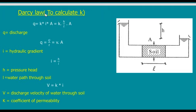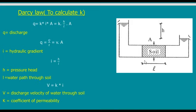There is an experiment where we put a sample of soil in a device. We have water at a fixed level on one side and a lower level on the other side, creating a difference in pressure — a head difference. Because of this, water is pushed to penetrate the soil and move to the other side. To do this experiment, we measure the head, the cross-sectional area of the soil, and the length of the soil.